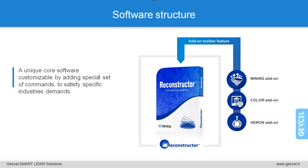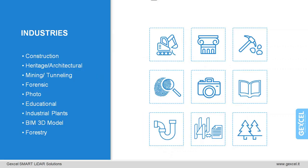There is also the Heron add-on, mostly used by Heron users. Heron is the Jaxl wearable portable mobile mapping system. Reconstructor is an all-in-one deliverable solution. It is a software dedicated to point cloud processing and can be used in most survey applications, going from construction to architectural, mining to forensic, cultural heritage, forestry, plant industry, asset management, and more.